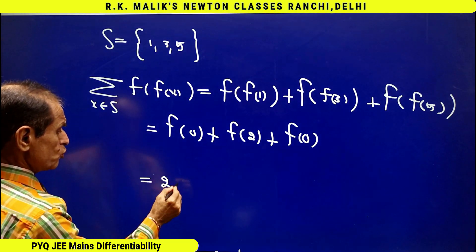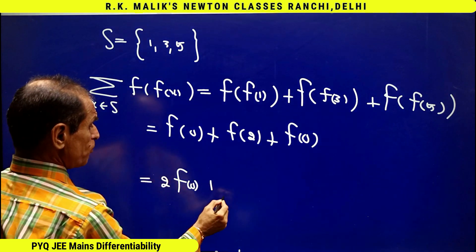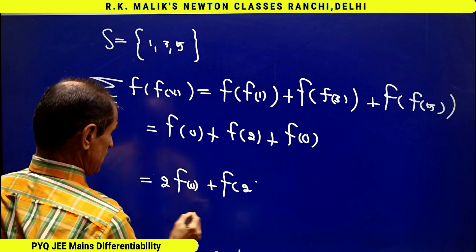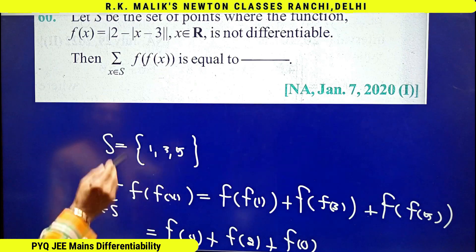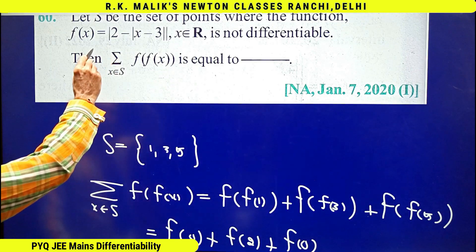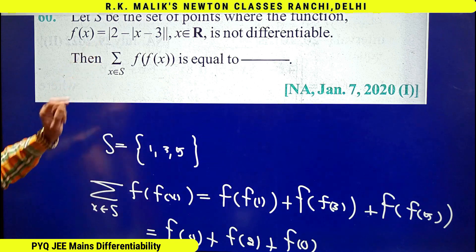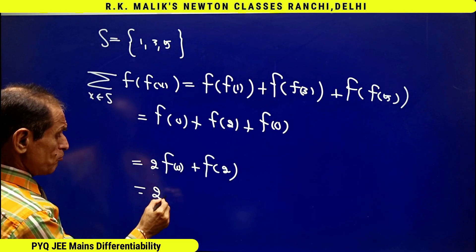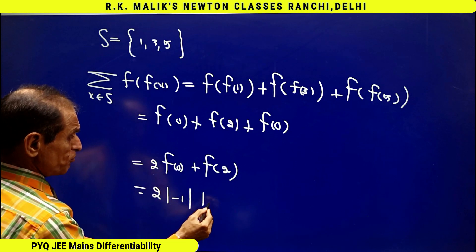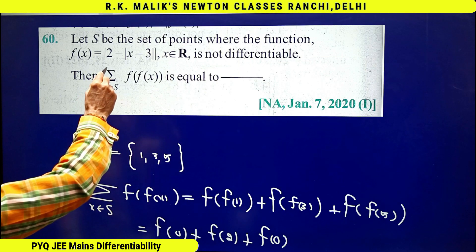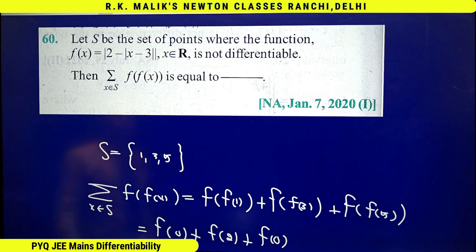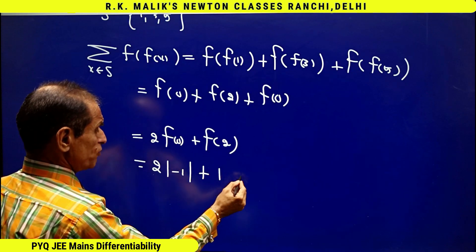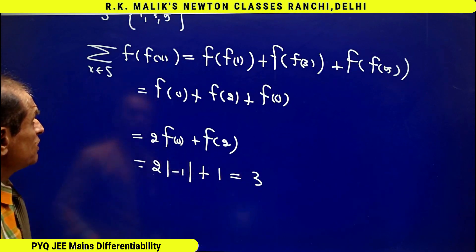That is 2 times f of 0 plus f of 2. And f of 0 from here is mod of minus 1, which equals 1. Therefore the answer is 3.